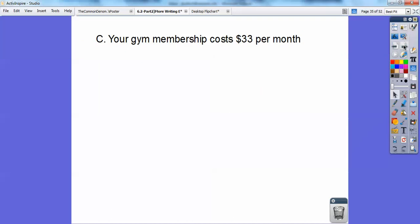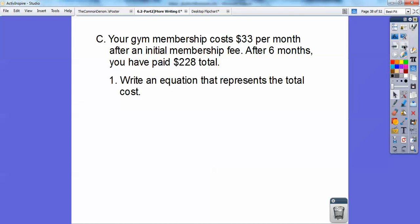Your gym membership costs you $33 a month after initial membership fee. So you have a fee on top of that to even start this $33 a month. So after 6 months, you've paid a total of $228. First thing I want you to do is write an equation that represents that total cost. So we're going to write it as in the form y equals mx plus b, and then find the total cost after 9 months.